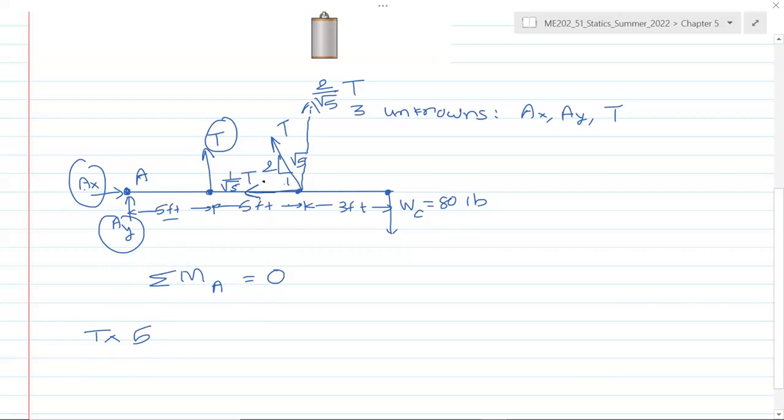Now when we do that, we need to consider the moment because of this vertical T, so that is T times the distance between them, which is 5, and that's counterclockwise so that's positive. There is no moment of horizontal component of this T. However, this will contribute, so plus 2 divided by square root of 5, T, that's the force multiplied by the distance, 5 plus 5, 10 feet. That is also counterclockwise. And third, 80 pounds moment about A is 80 multiplied by 5 plus 5 plus 3, which is 13, but this results in clockwise rotation.